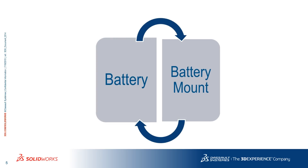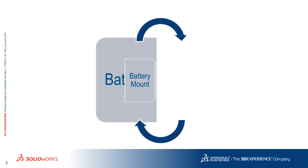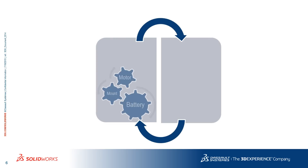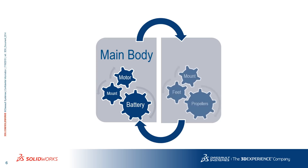Try and improve the main body first, where you will place components relative to the motor and the battery. Then figure out the propellers — how many you want to use, how big they are, how they are connected, etc. Once you have the body and propellers, you can design the frame.